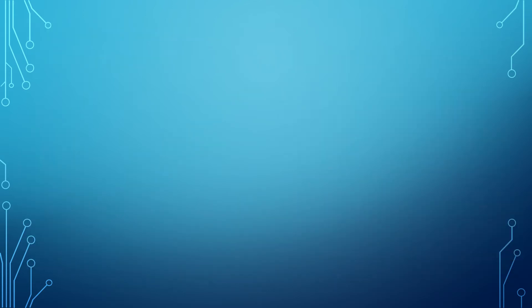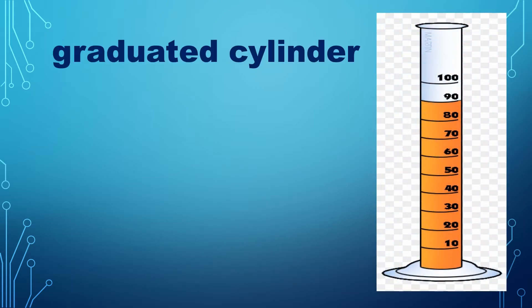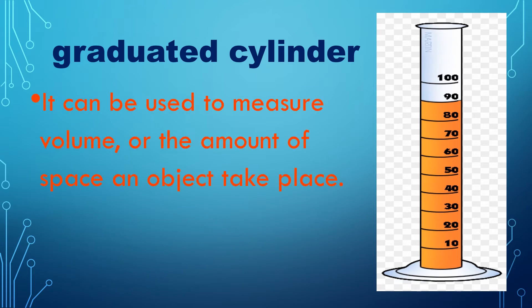Now let me introduce each tool. First is the graduated cylinder. A graduated cylinder can be used to measure volume, or the amount of space an object takes up. Volume is measured in milliliters, or mL.